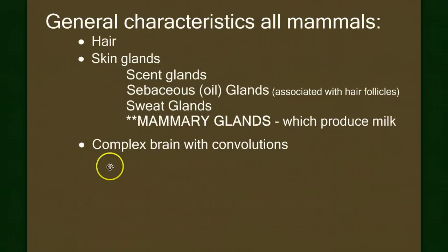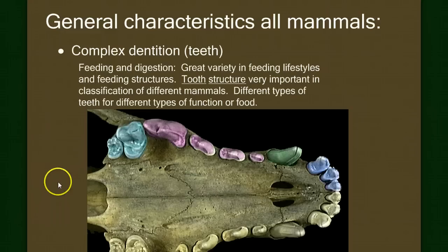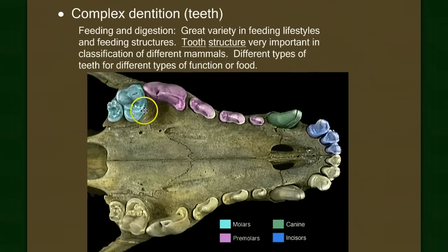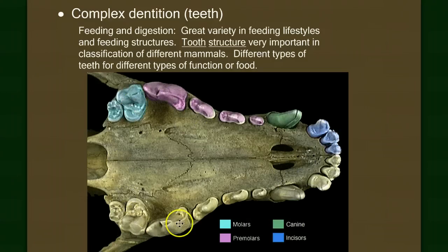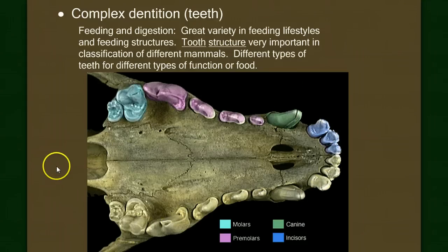The next characteristic uniquely mammalian is complex dentition, or teeth. Just as the shape of a bird's beak indicates its diet, mammal teeth show interesting differentiation. Only in mammals do we have incisors for cutting, canines for grabbing and puncturing, and premolars and molars with flat grinding surfaces. Other animals like sharks or crocodiles have teeth that are all basically the same — all sharp. This differentiation of tooth types is uniquely mammalian.